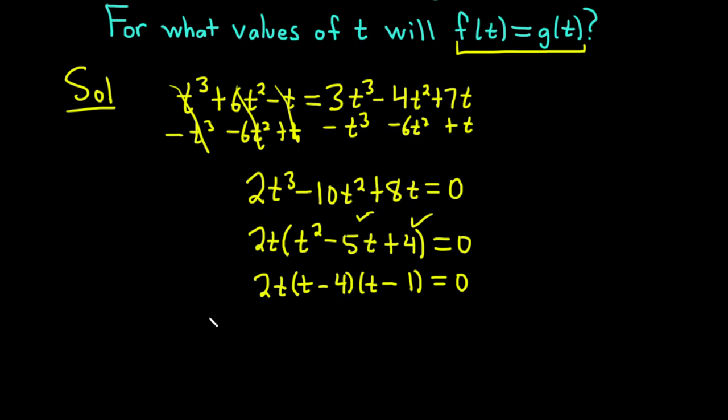Whenever you have a product equal to zero, you set each factor equal to zero. This tells us that 2t is zero or t minus 4 is zero or t minus 1 is zero.